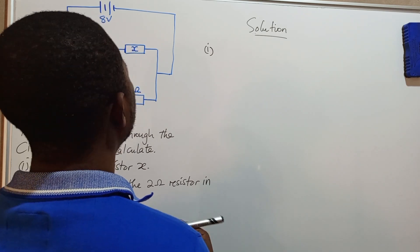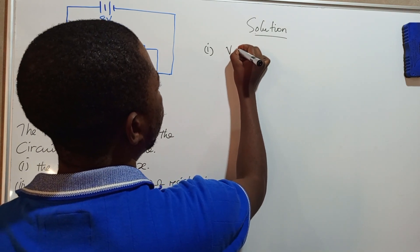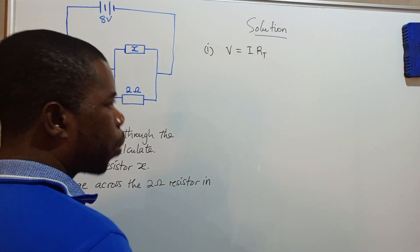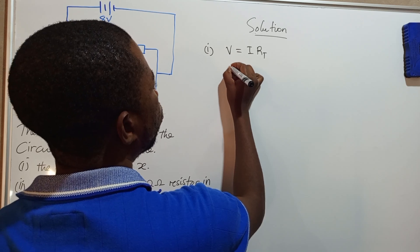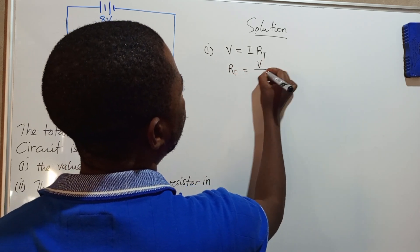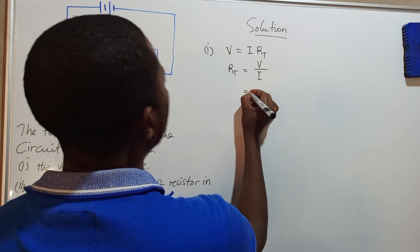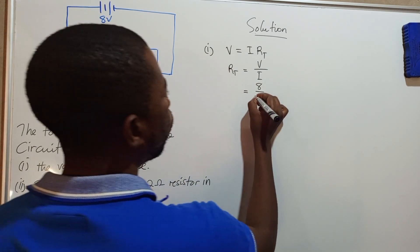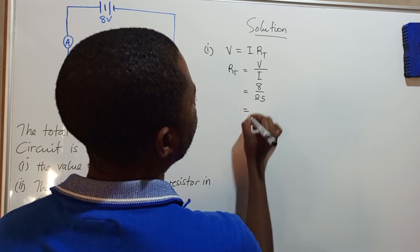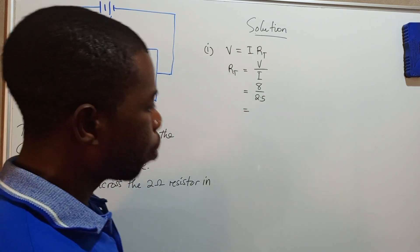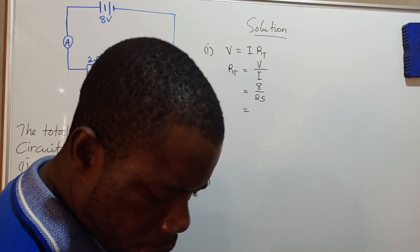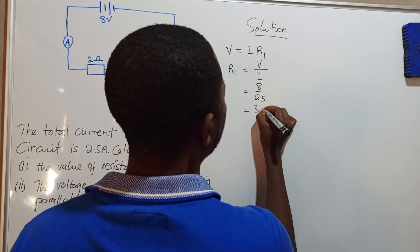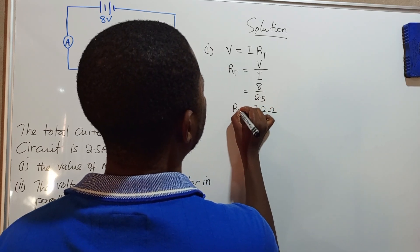To answer this question, the best way is first to find the total resistance. Total resistance is found using voltage over current. So total resistance equals total voltage over total current, which is 8 over 2.5. If we divide that, we get 3.2 ohms as the total resistance.